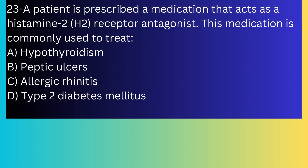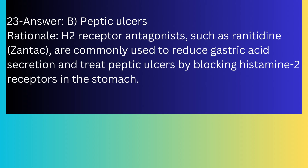Question number twenty-three: A patient is prescribed a medication that acts as a histamine-2 receptor antagonist. This medication is commonly used to treat: A) Hypothyroidism, B) Peptic ulcer, C) Allergic rhinitis, D) Type 2 diabetes mellitus. The answer is B, peptic ulcers. H2 receptor antagonists such as ranitidine (Zantac) are commonly used to reduce gastric acid secretion and treat peptic ulcers by blocking histamine-2 receptors in the stomach.